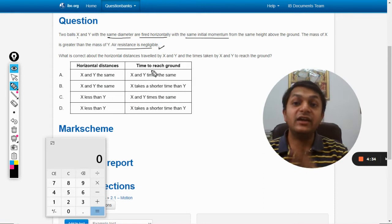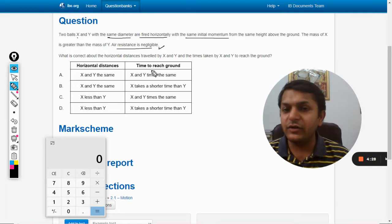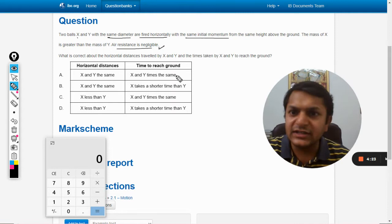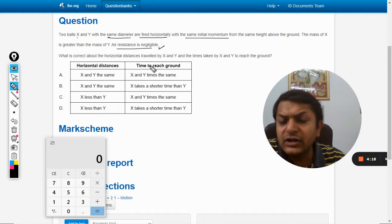Air resistance is negligible. This condition is very important because there are many questions in IB in which the air resistance is not negligible. You have to consider this, so it becomes very important for us to first verify whether the air resistance is negligible or not, and it is completely mentioned here, so no problem.